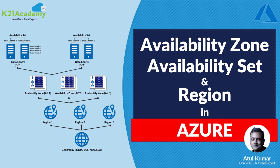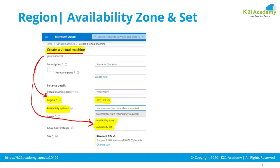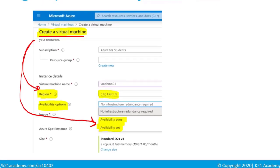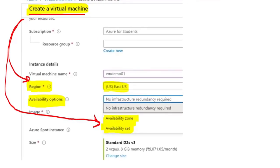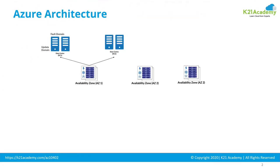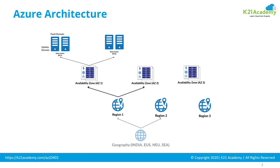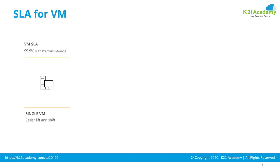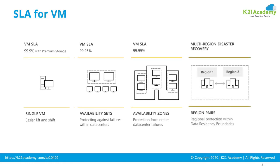When you provision a virtual machine on Microsoft Azure, you select a region in which you want to place this virtual machine, and then you have an option to select either an availability zone or availability set. So what is this availability set and availability zone? What is a region, a geography, or a fault domain that makes an availability set? Also, what is a service level agreement that Azure provides for your virtual machines depending on these options? I'm going to cover all this in today's episode.